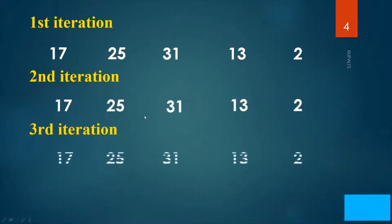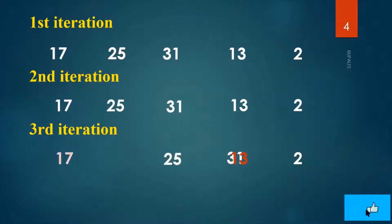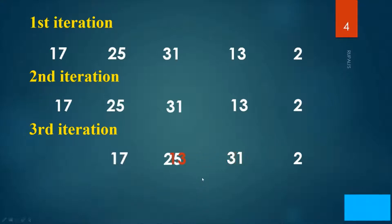In the third iteration, temp is 13. Compare 31 with 13 — 31 is greater, so shift 31. Then compare 13 with 25 — 25 is greater, so shift 25. Then compare 13 with 17 — 17 is greater, so shift 17. Finally, write 13 at the first position. In this way, the third iteration works.